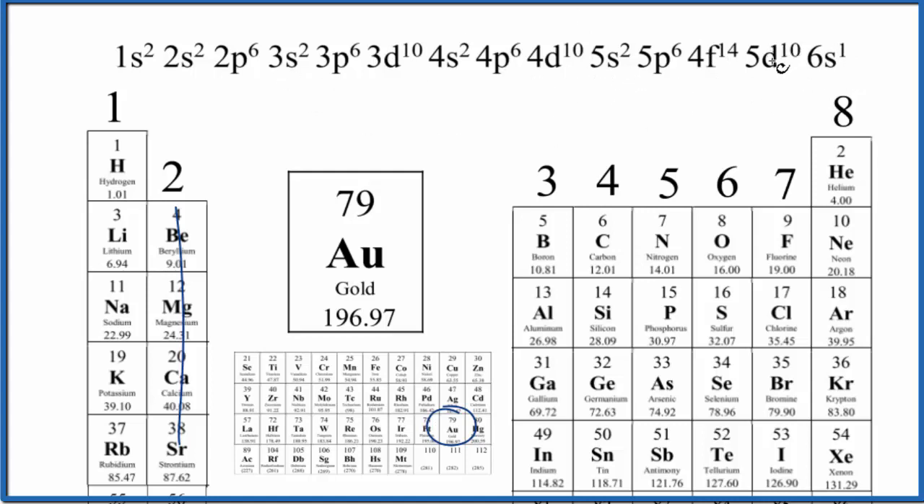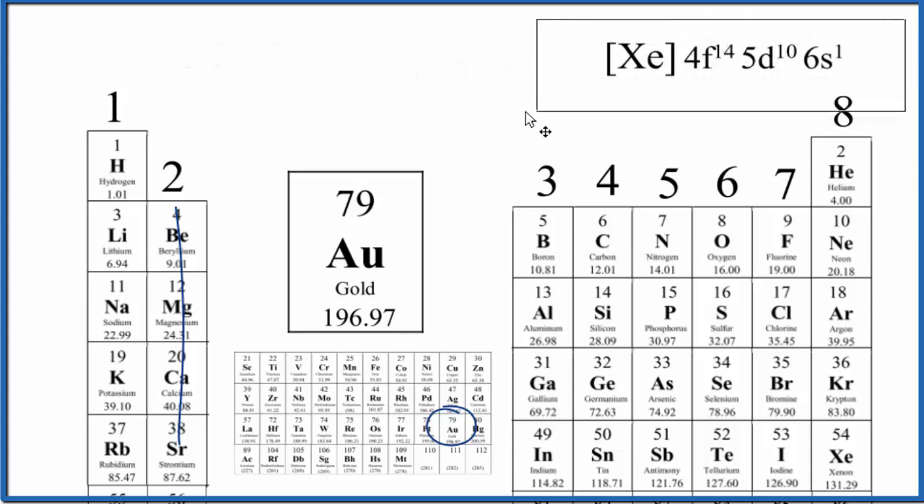What we're going to do is condense this. So we have xenon. That's the noble gas before gold. It has 54 total electrons. So let's take and replace this with xenon. Then we'll make it a little bigger and move it to the middle.